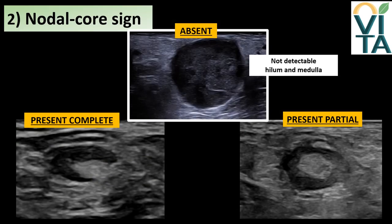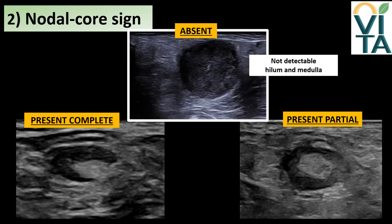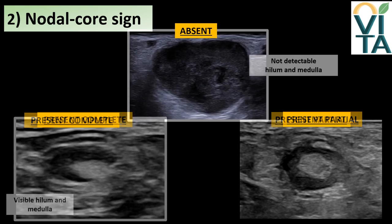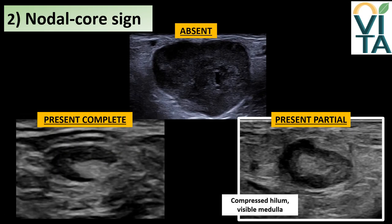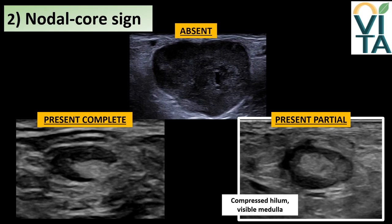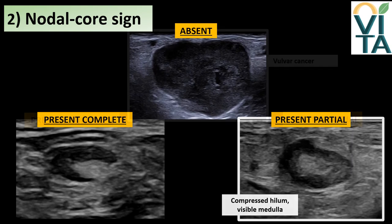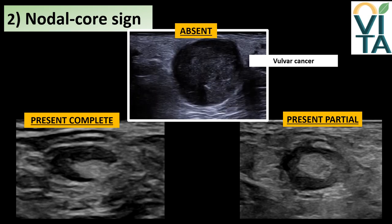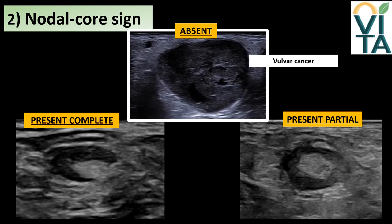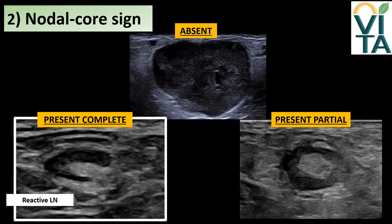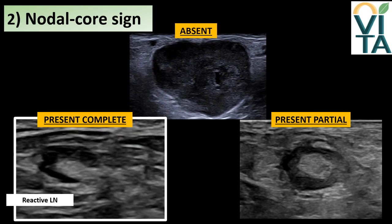In the video above, neither the hilum nor the medulla can be detected, so the nodal core sign is defined as absent. Below on the left, the complete hyperechogenic medulla and hilum are clearly visible, so the nodal core sign is present and complete. In the lymph node on the right, the hilum cannot be seen but the medulla is recognizable, thus the nodal core sign is present and partial. The loss of normal architecture in the first lymph node is the result of complete metastatic involvement from vulvar cancer, while the two lymph nodes with present nodal core sign are normal.